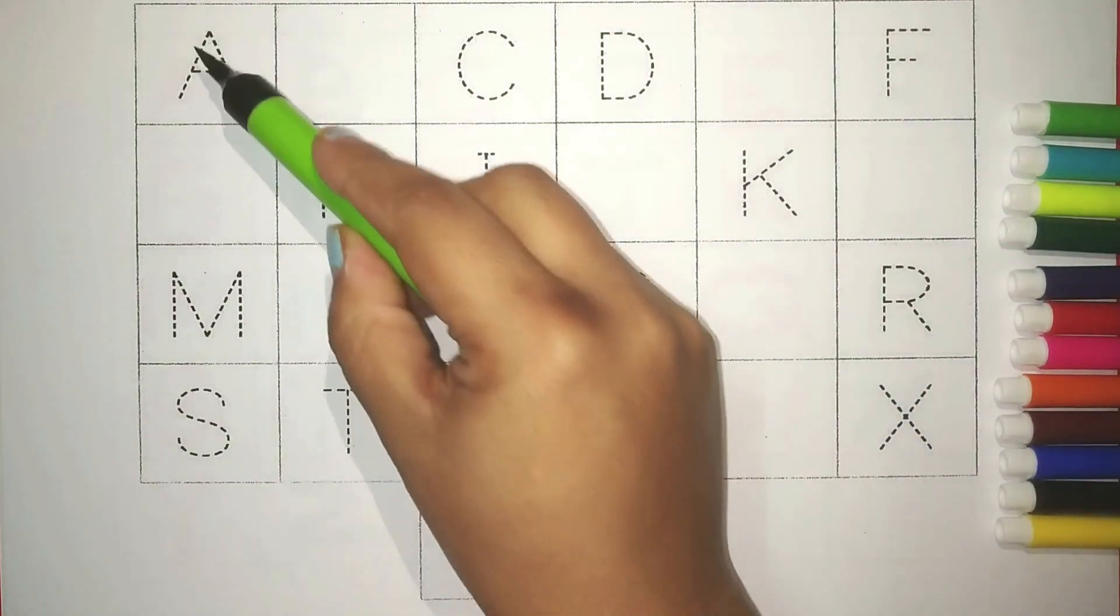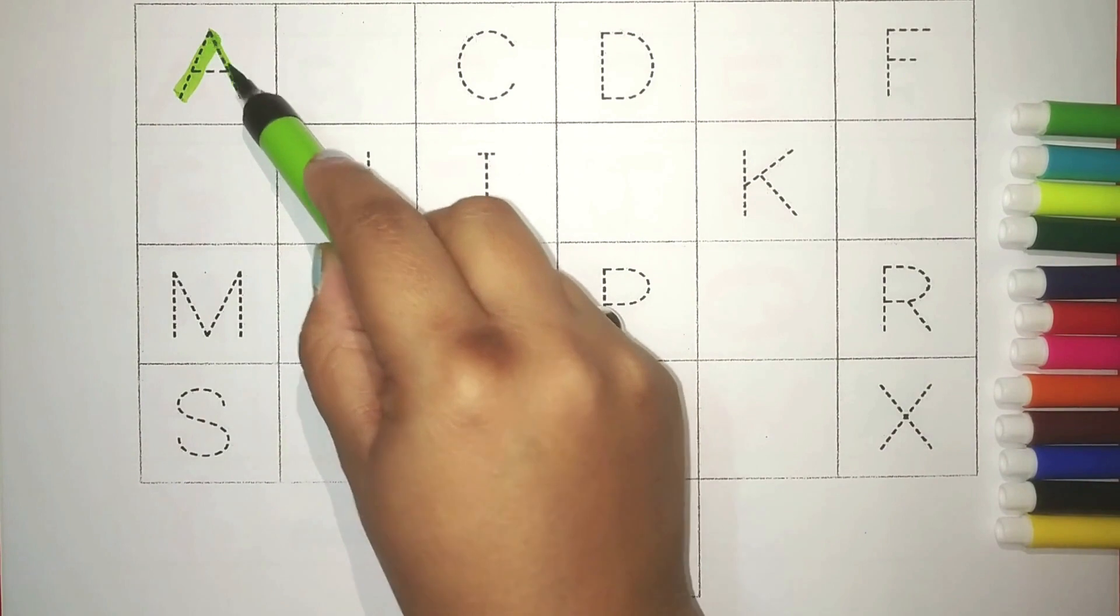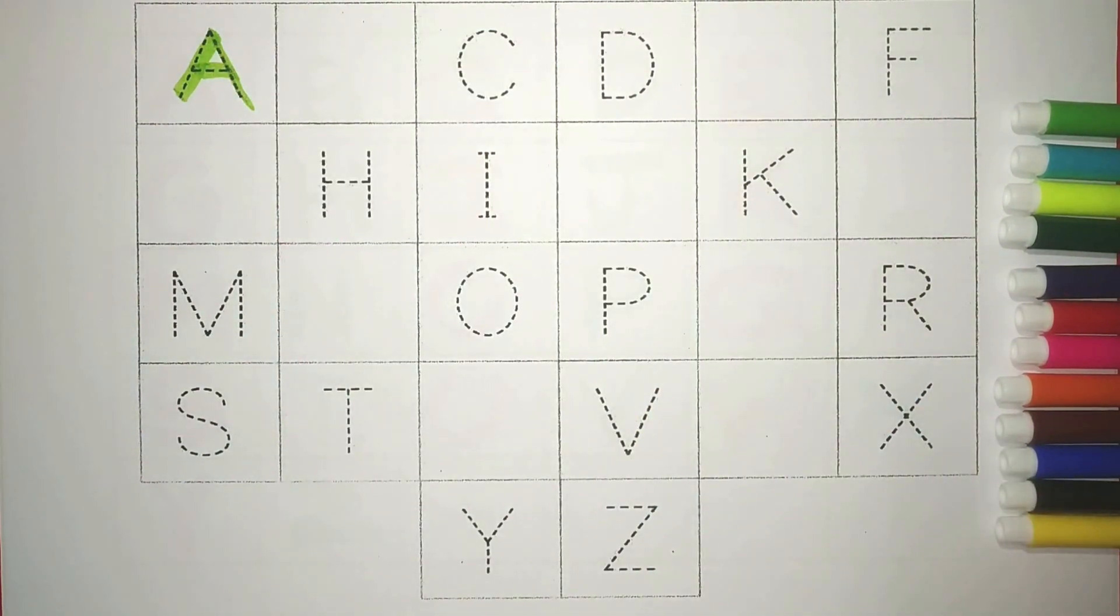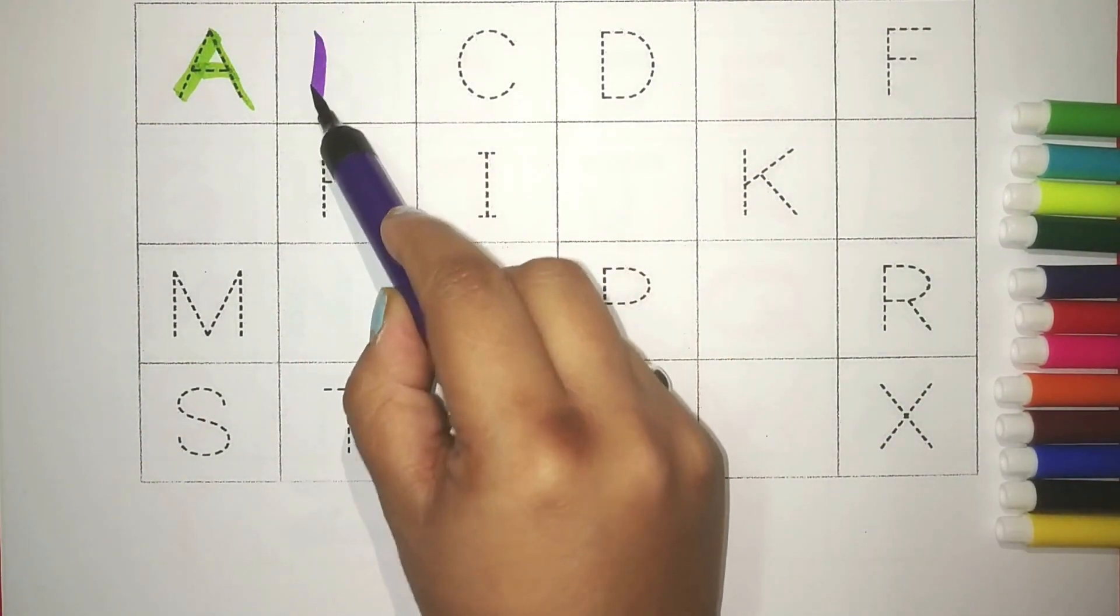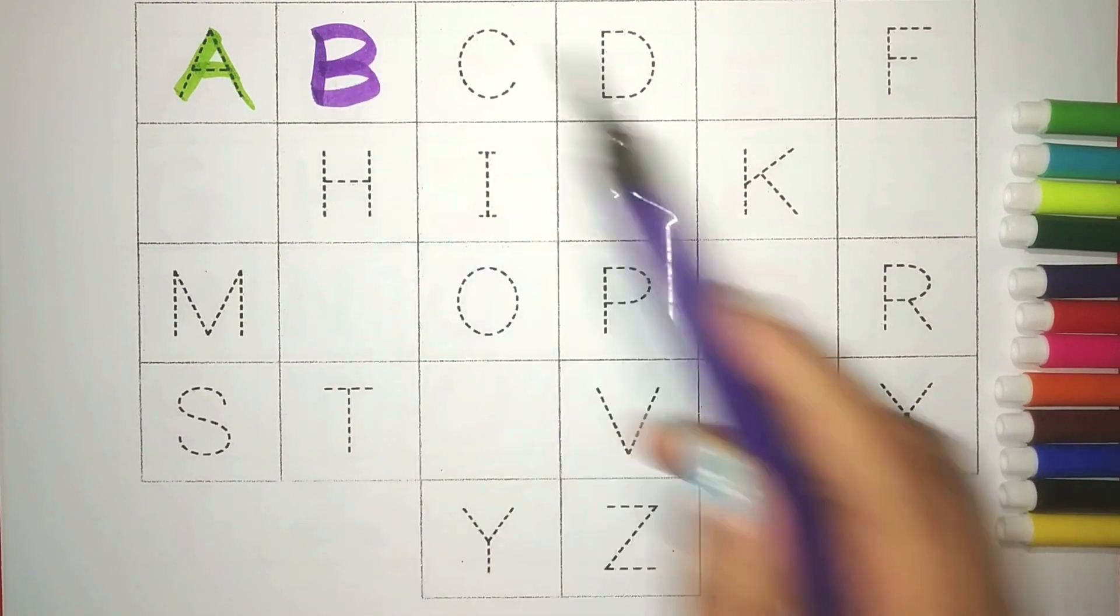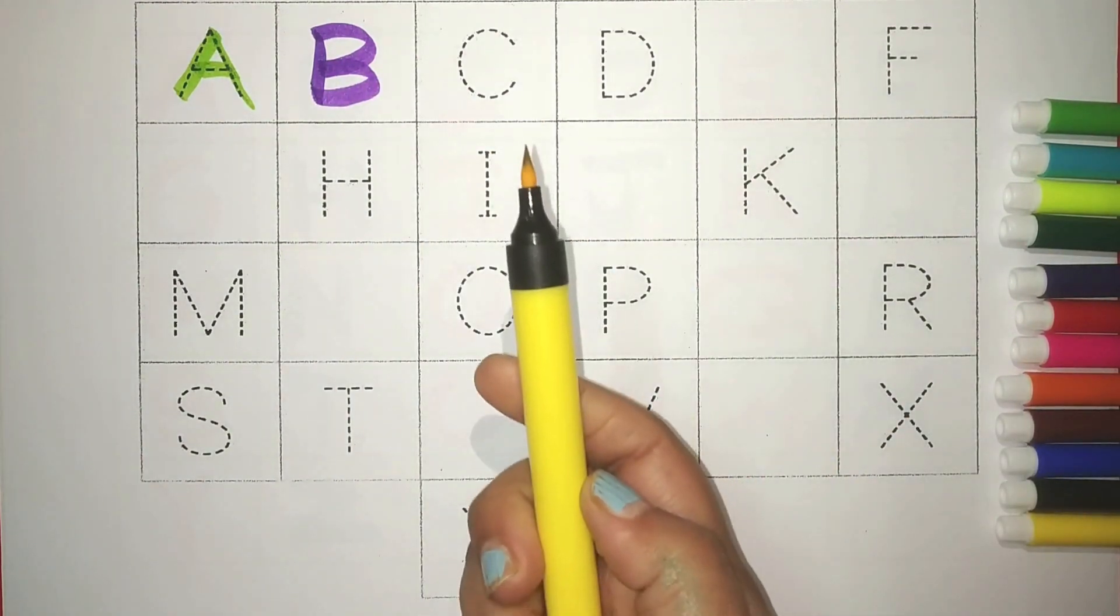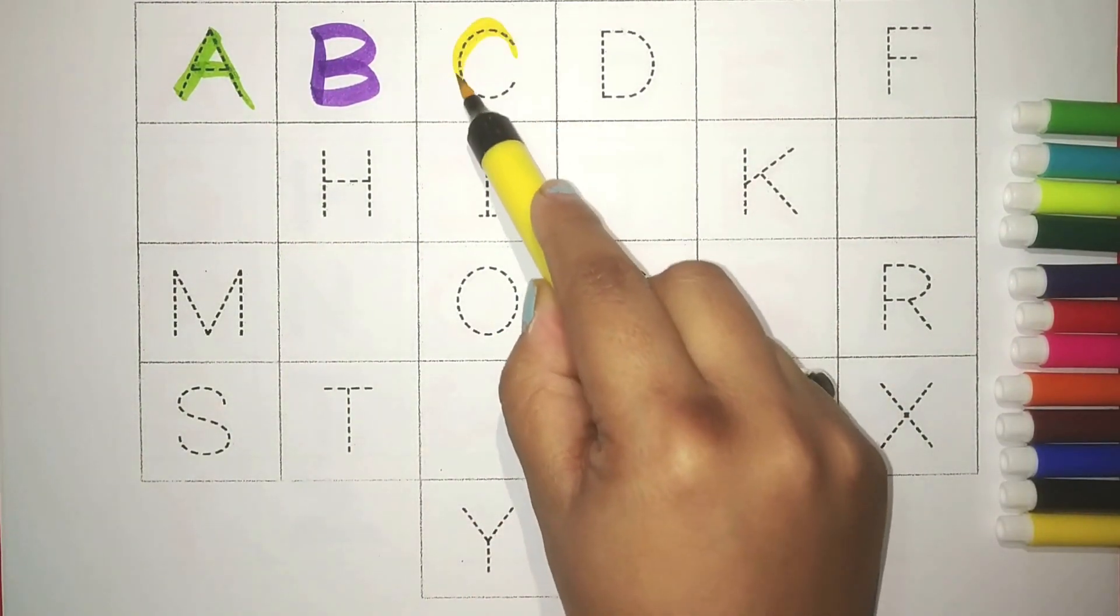Green A. A for apple. Purple B. B for balloon. Yellow C. C for cat.